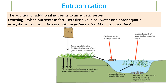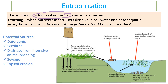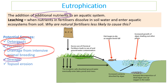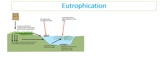The key example you need to know in detail is eutrophication. Eutrophication is when additional nutrients are added to a stream or river, causing a change in the aquatic system. The potential sources include sewage and fertilizers, but also detergents from washing machines, drainage from animal breeding systems, and topsoil erosion carrying nutrients into the water.